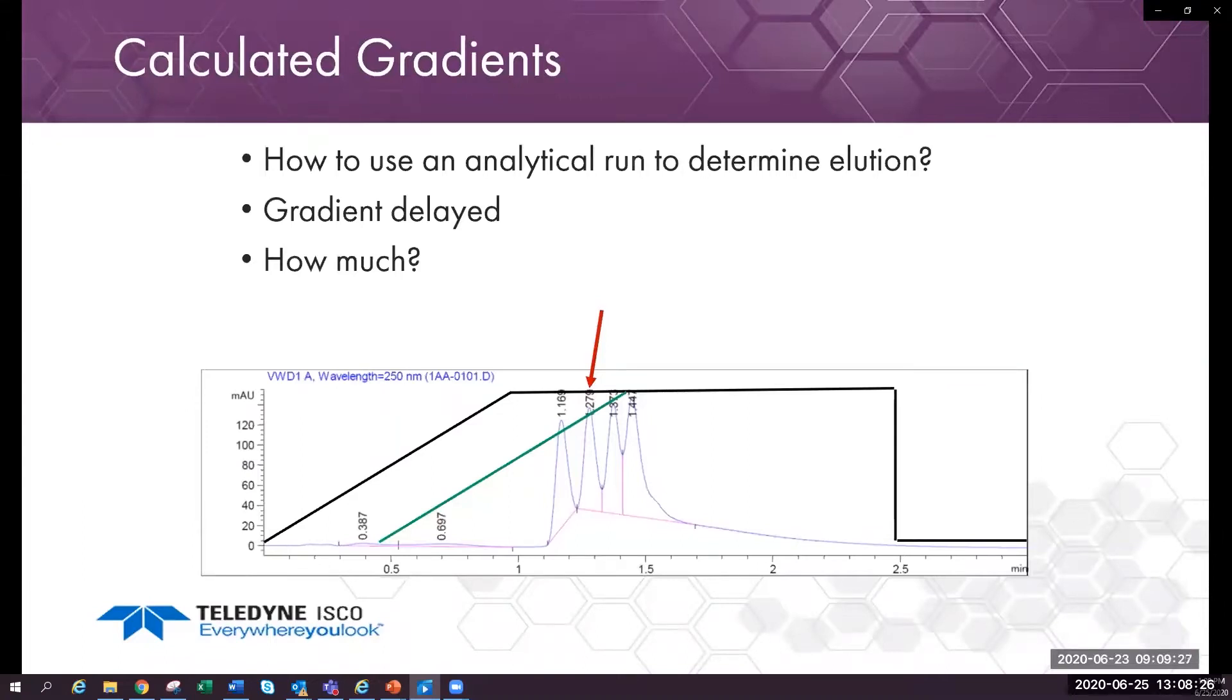The green line is the gradient shifted by the dwell and column volume. If you have a Waters system, they use the term extra column volume for dwell volume. The second peak looks like about 85% solvent after correcting the gradient for the dwell and column volume delay.